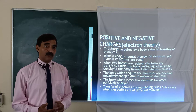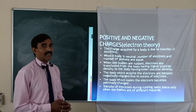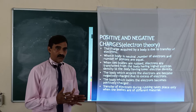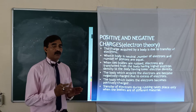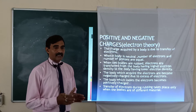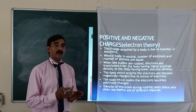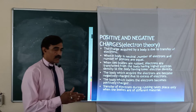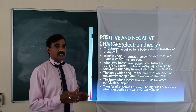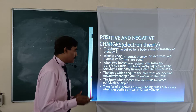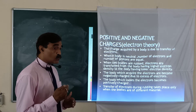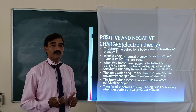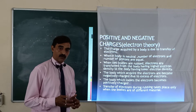How a body acquires positive or negative charge depends upon the electron theory. When two bodies are rubbed, electrons are transferred from one body to the other. If body A is rubbed with body B, electrons transfer from the body with higher electron density to the one with lower electron density. The body that loses electrons acquires positive charge, and the body that gains electrons becomes negatively charged due to the excess of electrons.